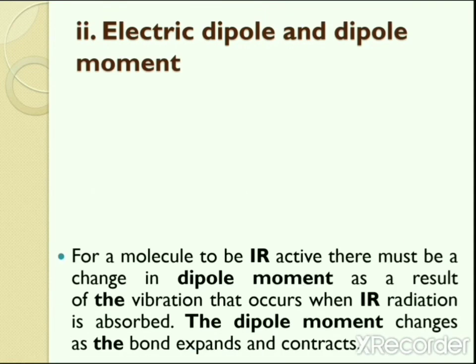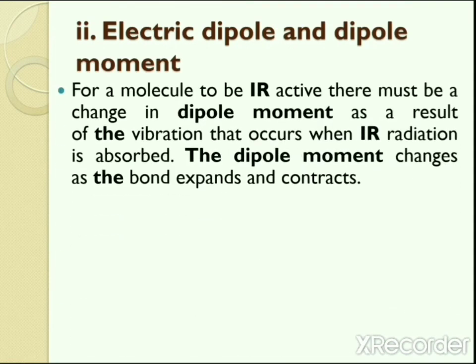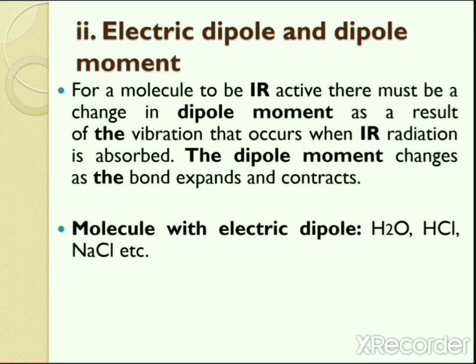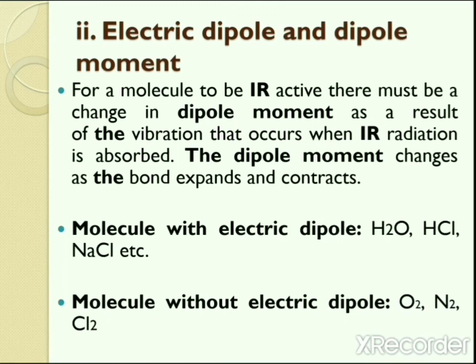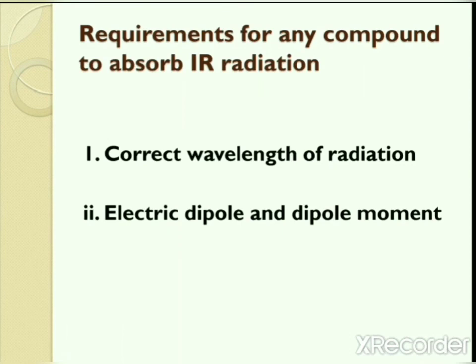The second necessary condition is that the molecule must not only contain an electric dipole, but also undergo a change in dipole moment. An electric dipole is defined as a pair of opposite charges separated by a distance, and electric dipole moment is a measure of the separation of positive and negative electric charges within a system — a measure of the system's overall polarity. Molecules like H₂O, HCl, and NaCl contain an electric dipole and are therefore infrared active. Molecules like O₂, N₂, and Cl₂ do not contain any electric dipole and are infrared inactive. Any compound will absorb infrared radiation only when it fulfills both of these necessary conditions.